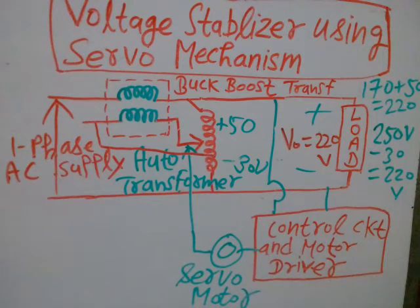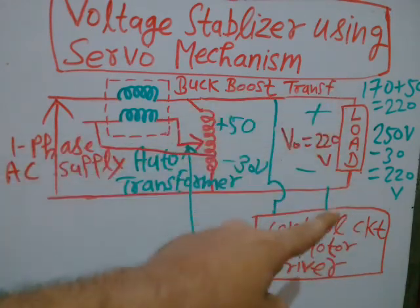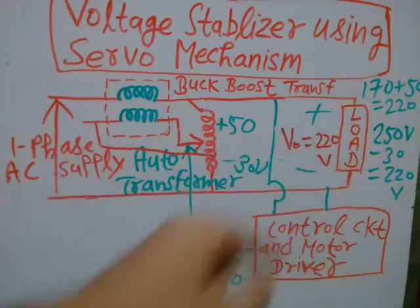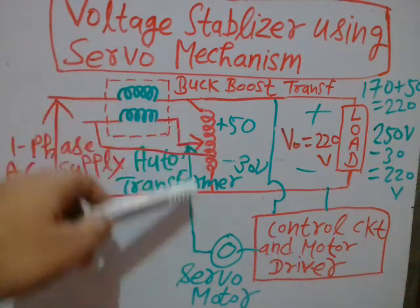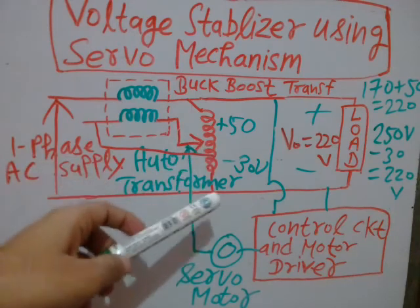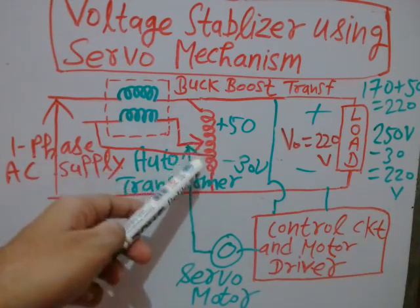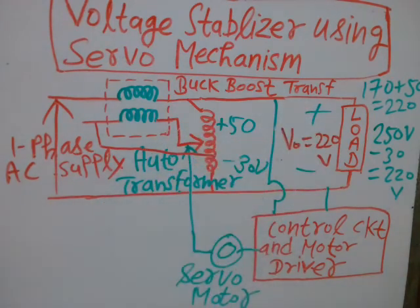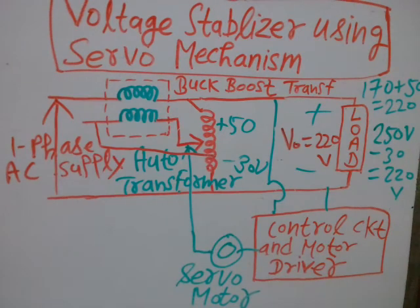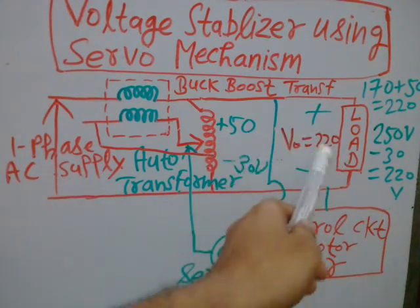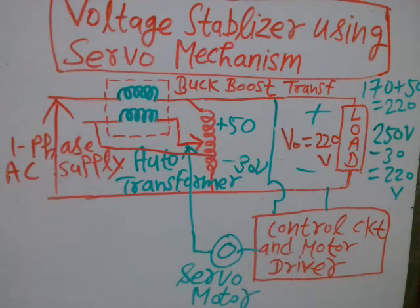In summary, as soon as even a slight change in load voltage occurs, it is sensed by the control circuit. The control circuit sends a command signal to the motor driver, which rotates the servo motor to compensate the voltage by the required amount. In all conditions — whether over-voltage or under-voltage — the voltage at the load is maintained at the rated value of 220 volts for domestic purposes.